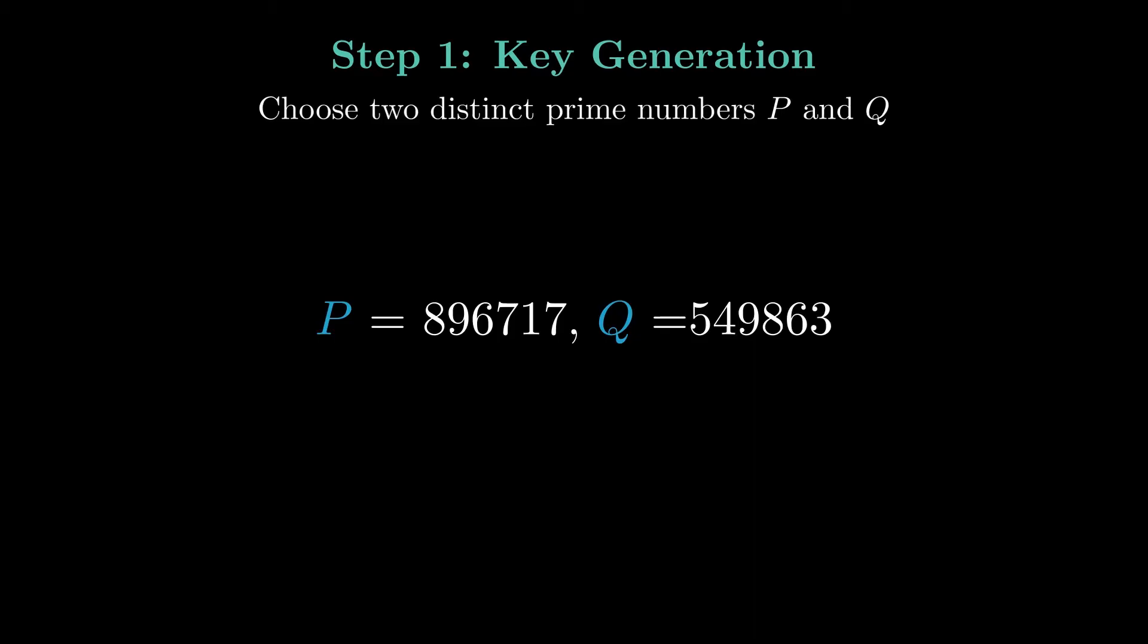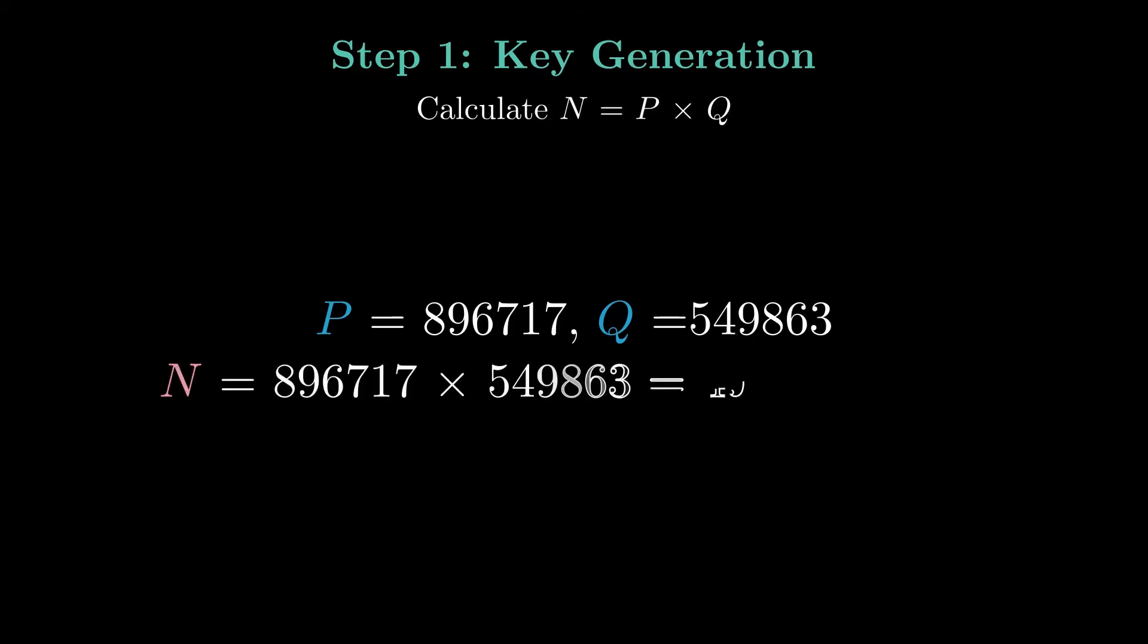Now let's move to the RSA encryption algorithm. The first step is key generation. Select two large distinct prime numbers p and q. Multiply p and q to obtain n. n is used as the modulus.